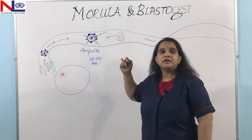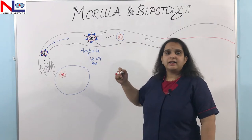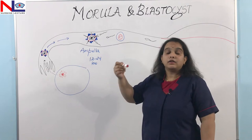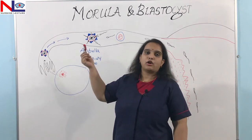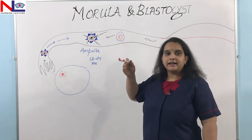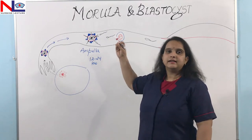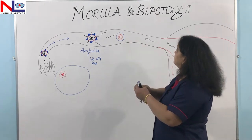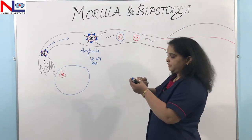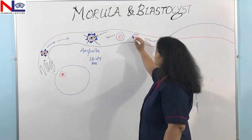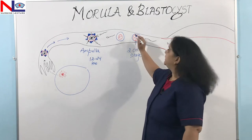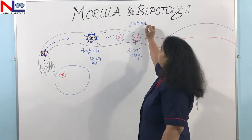This zygote goes into continuous division — binary division or mitotic division — in which this one cell divides to form two, then four, then eight cells, then sixteen cells and onwards. This is how this zygote, as a mononucleated single cell, undergoes cleavage and forms the two, four, eight, and sixteen cell structures in the uterine tube. By binary division it forms the two-cell structure, and this two-cell stage completes within 30 hours after fertilization.